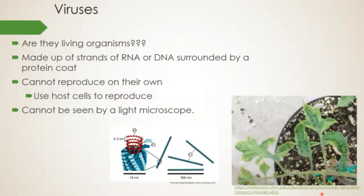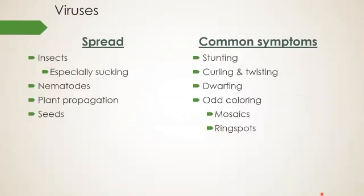Viruses spread through insects, especially those with sucking mouthparts like aphids — probably one of the main culprits. They're also spread through nematodes, through plant propagation from vegetative cuttings, and on seeds. Common symptoms include stunting, curling and twisting, dwarfing, and odd coloration patterns — mosaics or ring spots that can be indicative of viruses. These are all the ways viruses can express themselves as a pathogen.